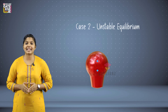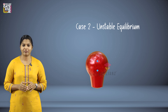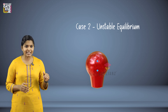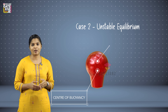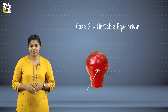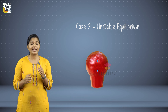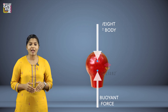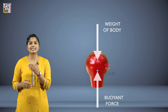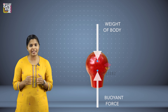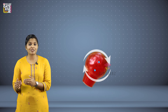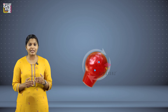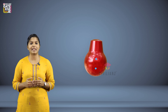The second case is unstable equilibrium. In this condition, the center of gravity will lie above the center of buoyancy. A destroying couple will be produced when the body is subjected to any kind of displacement, and this destroying couple will keep the body away from its original position.